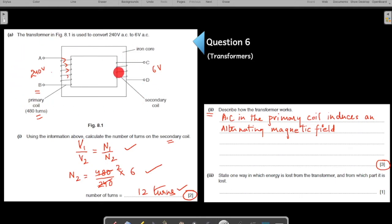As a result, alternating EMF is induced in the secondary. What do you say next? As a result, an alternating EMF is induced in the secondary, secondary coil.